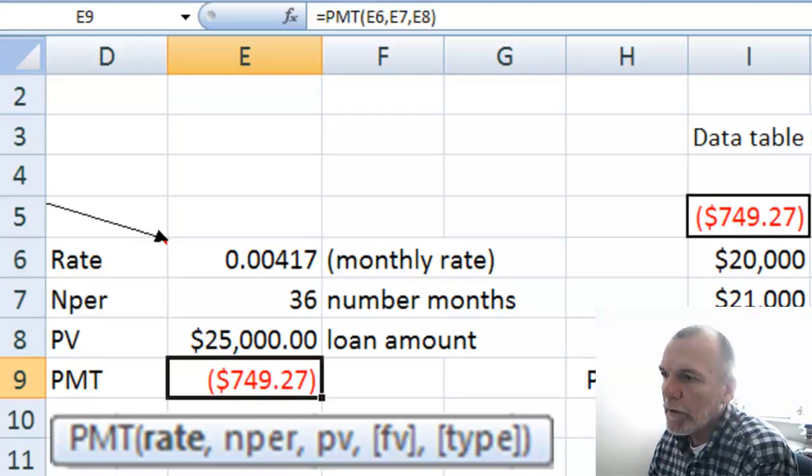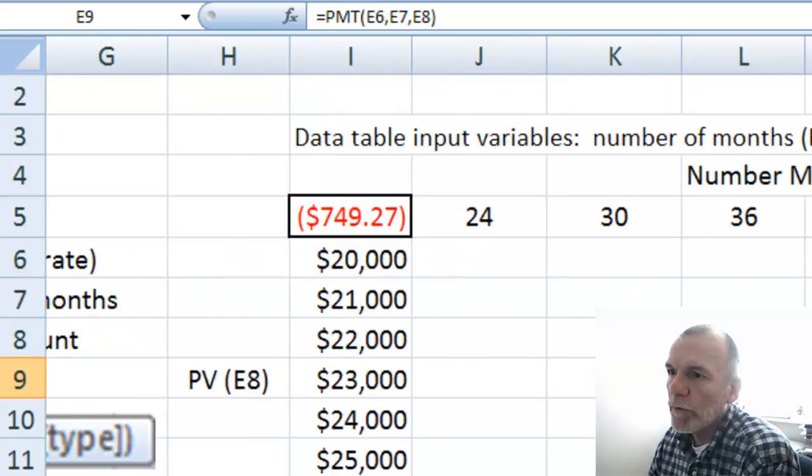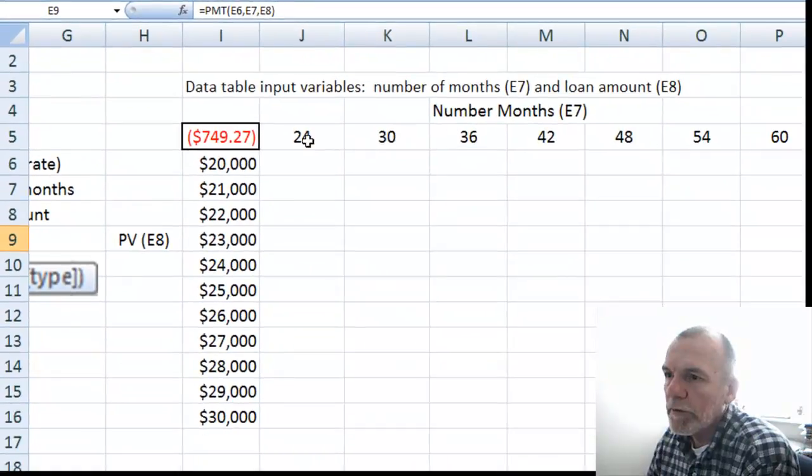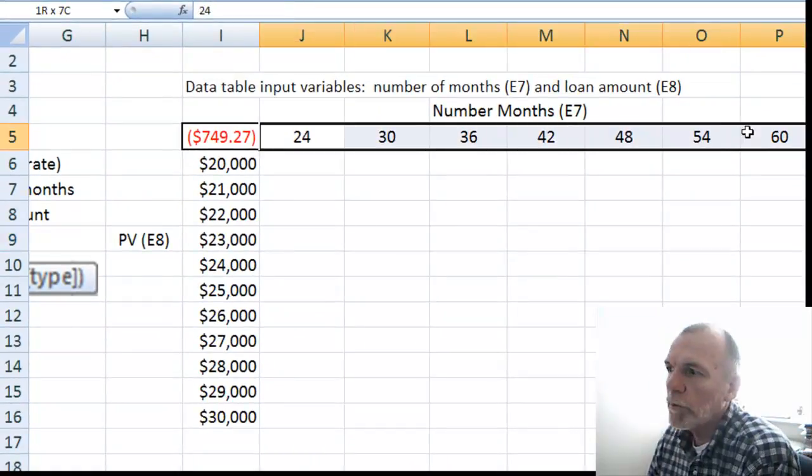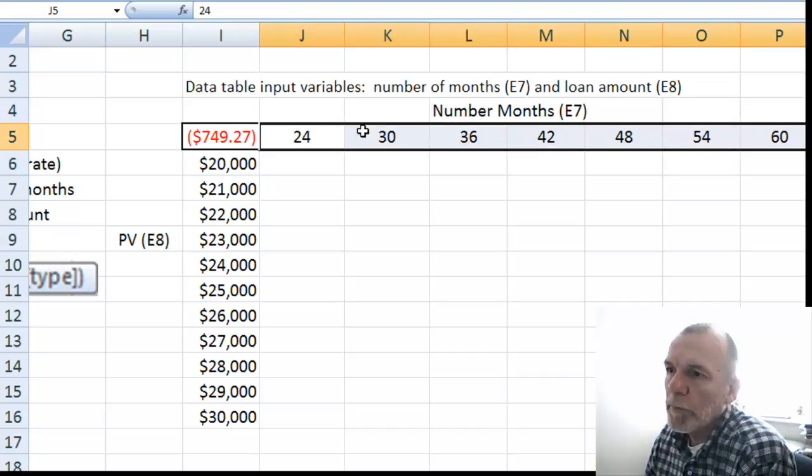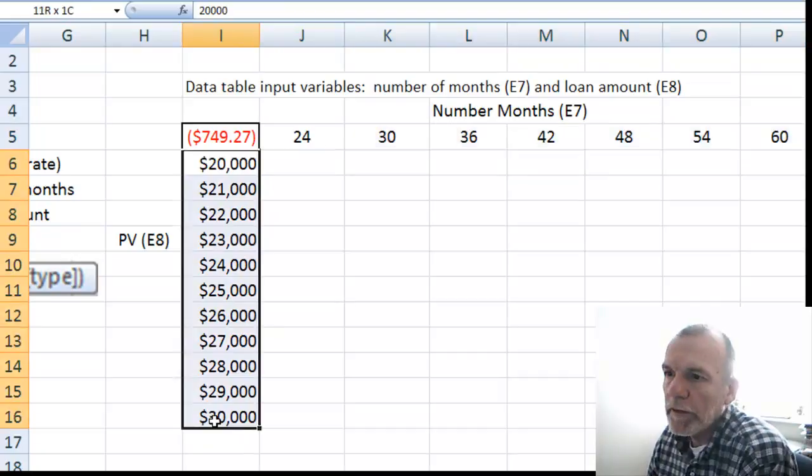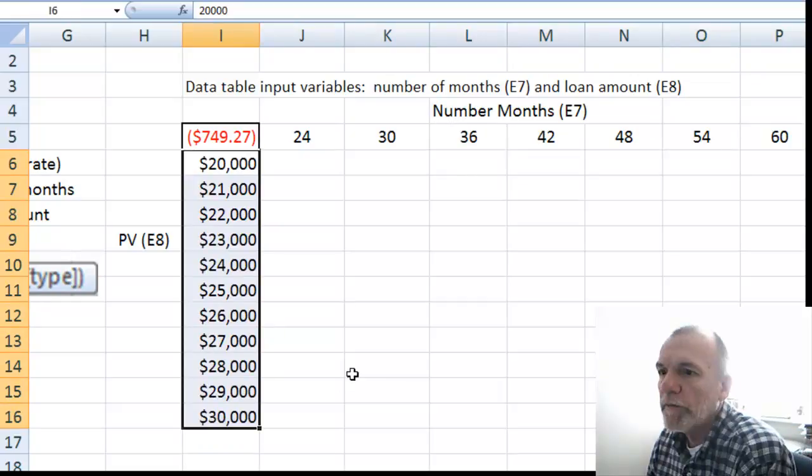On the worksheet, we've recorded in advance this top row of values from 24 to 60 to represent some different values for the number of months. And then down this column, in column I, some different values for the present value from $20,000 to $30,000.